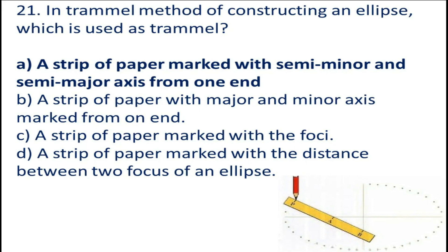Question number 21: In the trammel method of constructing an ellipse, which is used as the trammel? A. A strip of paper marked with the semi-minor and semi-major axis from one end.